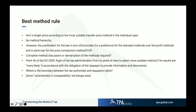New is a best method rule. As a taxpayer, you have to set your arm's length price according to the most suitable transfer pricing method in your individual case. You can apply any method from the catalog of transfer pricing methods that is appropriate for your individual transaction. However, the law still provides a preference for the standard methods, with a clear indication for standard methods over profit methods.